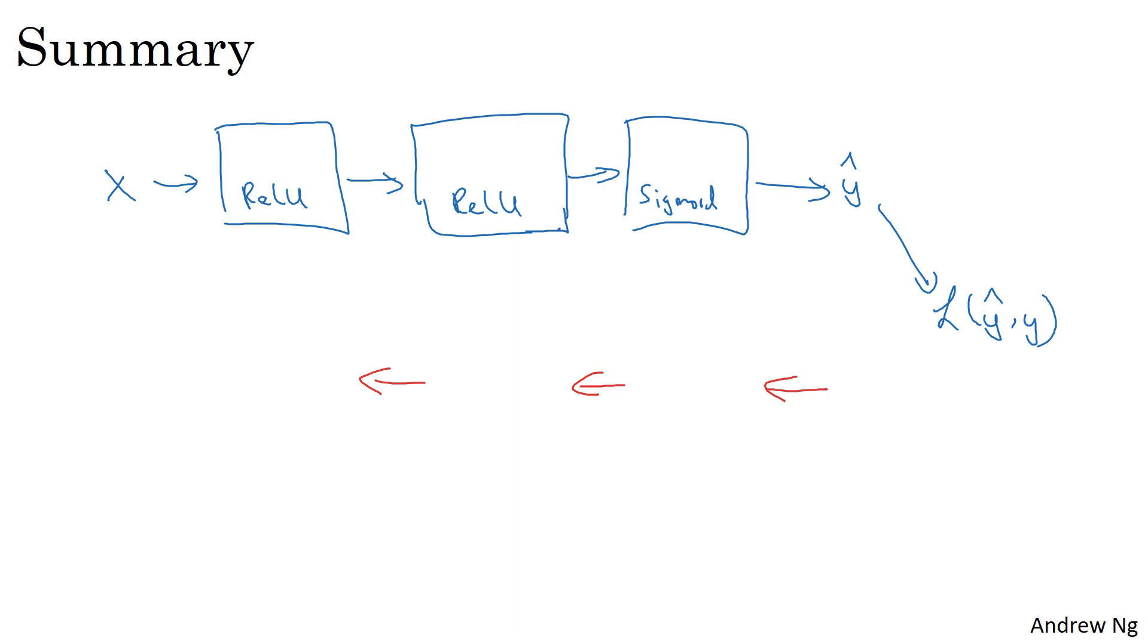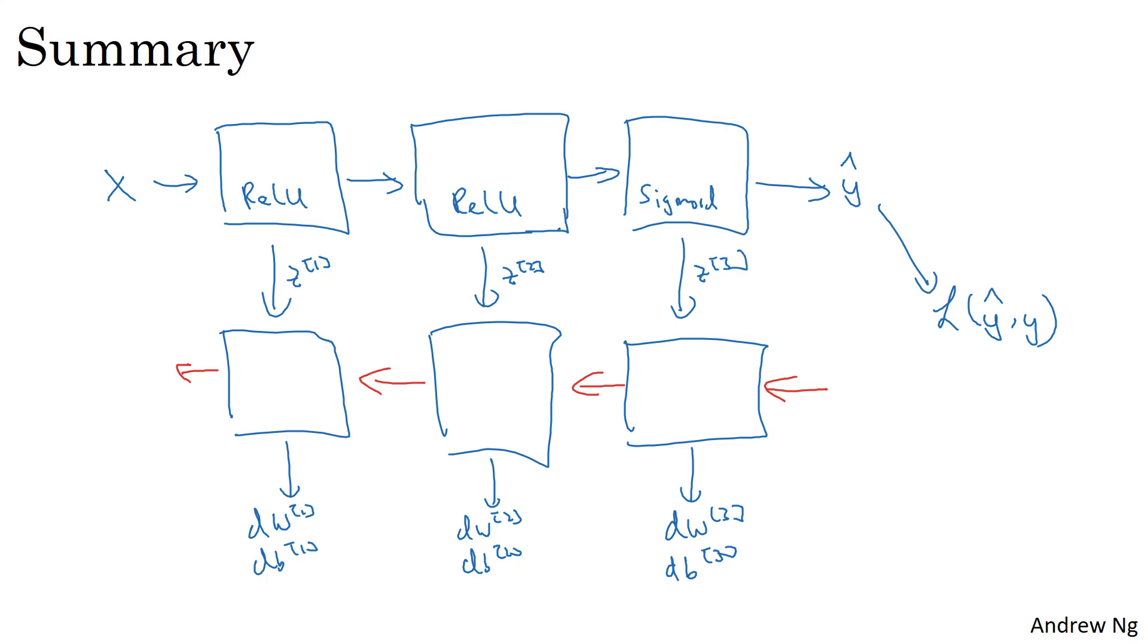I'll draw the arrows first. You would then have backprop compute the derivatives: dW^(3), db^(3), dW^(2), db^(2), dW^(1), db^(1). Along the way, you would be computing the cache with Z^(1), Z^(2), Z^(3). And here you pass back dA^(2) and dA^(1). This could compute dA^(0), but we won't use that, so you can just discard that. This is how you implement forward prop and backprop for a three-layer neural network.